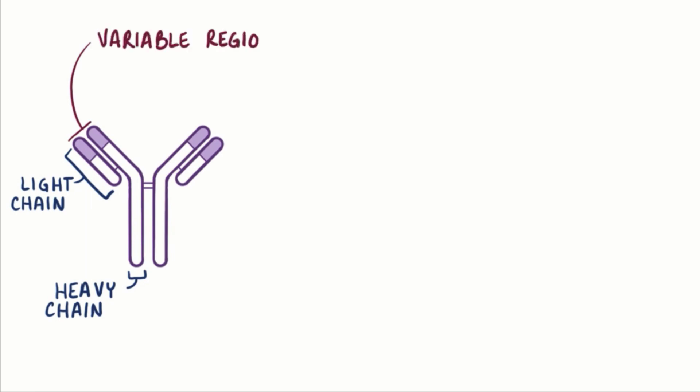Each antibody has two identical light chains and two identical heavy chains that combine into a Y-shape. This Y-shaped antibody has two arms with identical tips, which is called the variable region. This variable region contains an antigen-binding domain that's unique to that particular antibody.